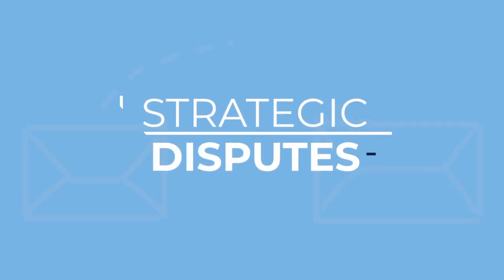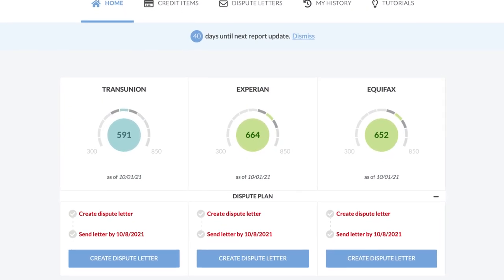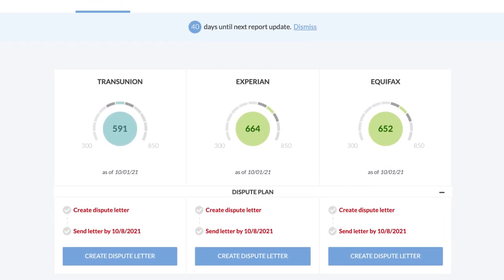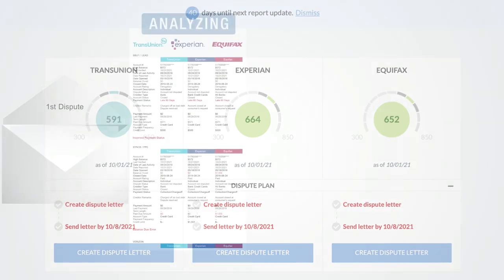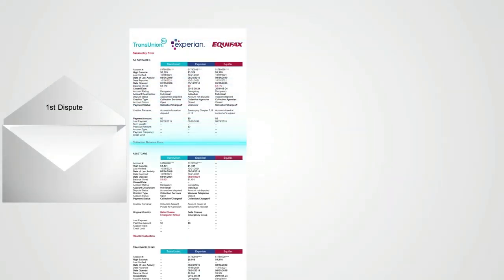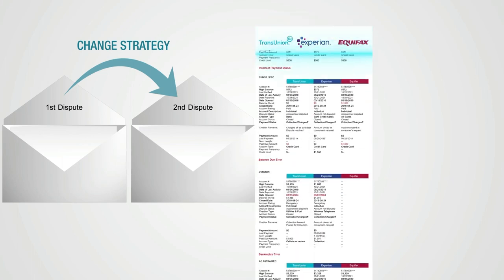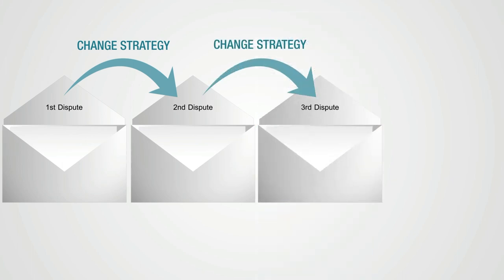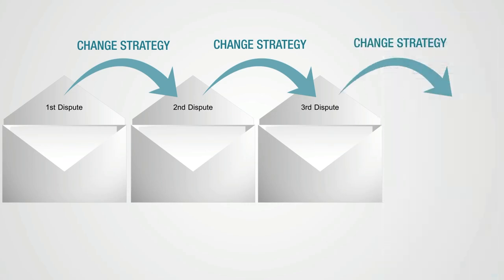It would be great if you could just send one dispute letter and be done with it, but most of the time it doesn't work out that way. The dispute process is almost always a multi-letter process. It might take a few follow-up letters over a few months to achieve a result. Every dispute letter you send is called a round.